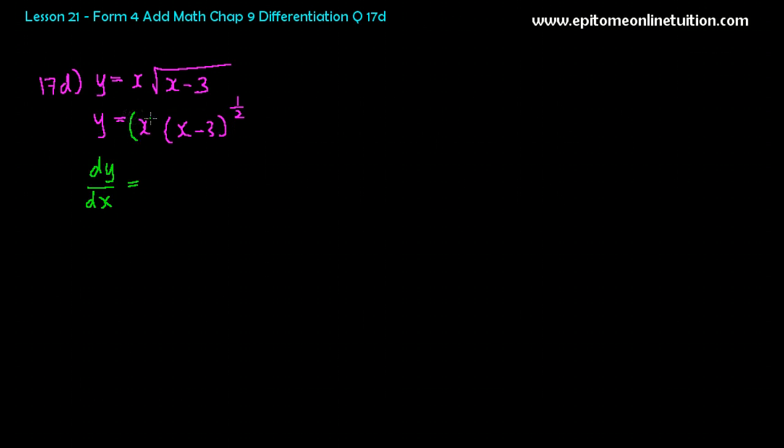The product rule method says you would copy the front and differentiate the back. So copy the front, differentiate the back. This one, you use the composite function method on its own. Okay, so that's a half in front here. Copy. And the power, you have to minus one. So half minus one is negative half, and differentiate inside. It's a one.